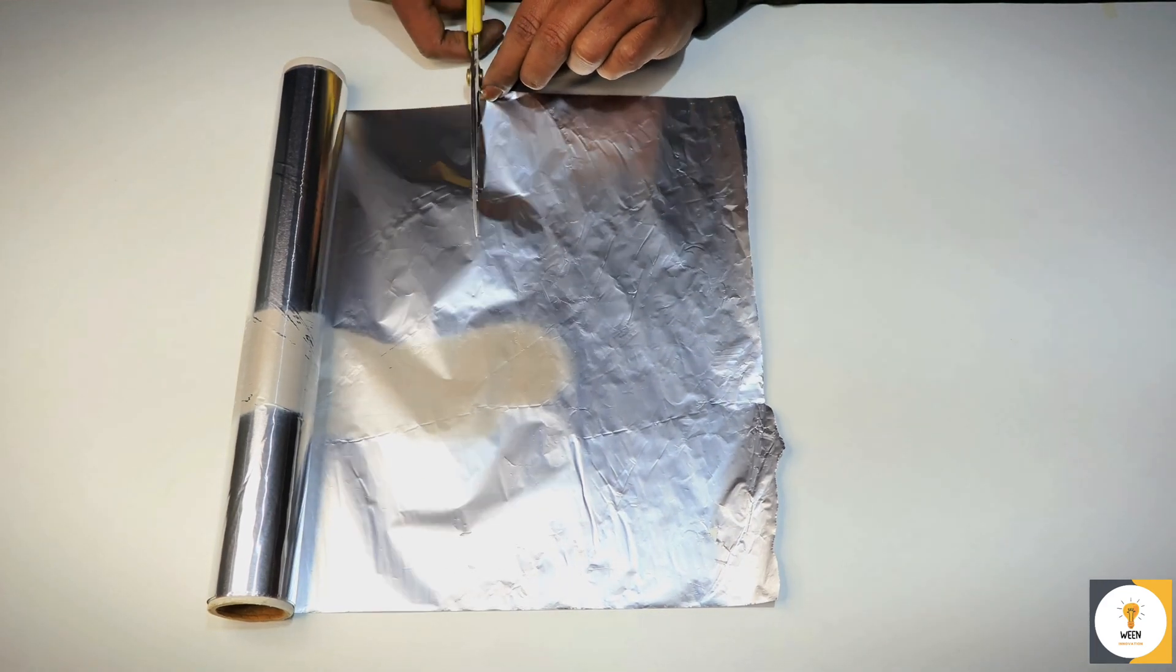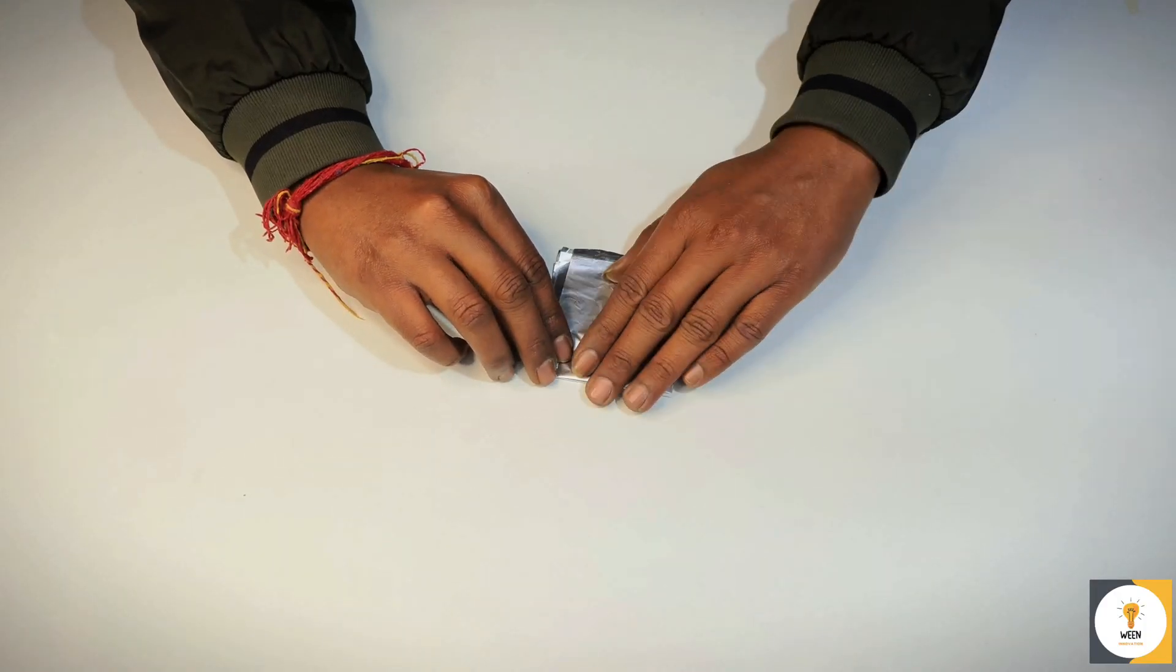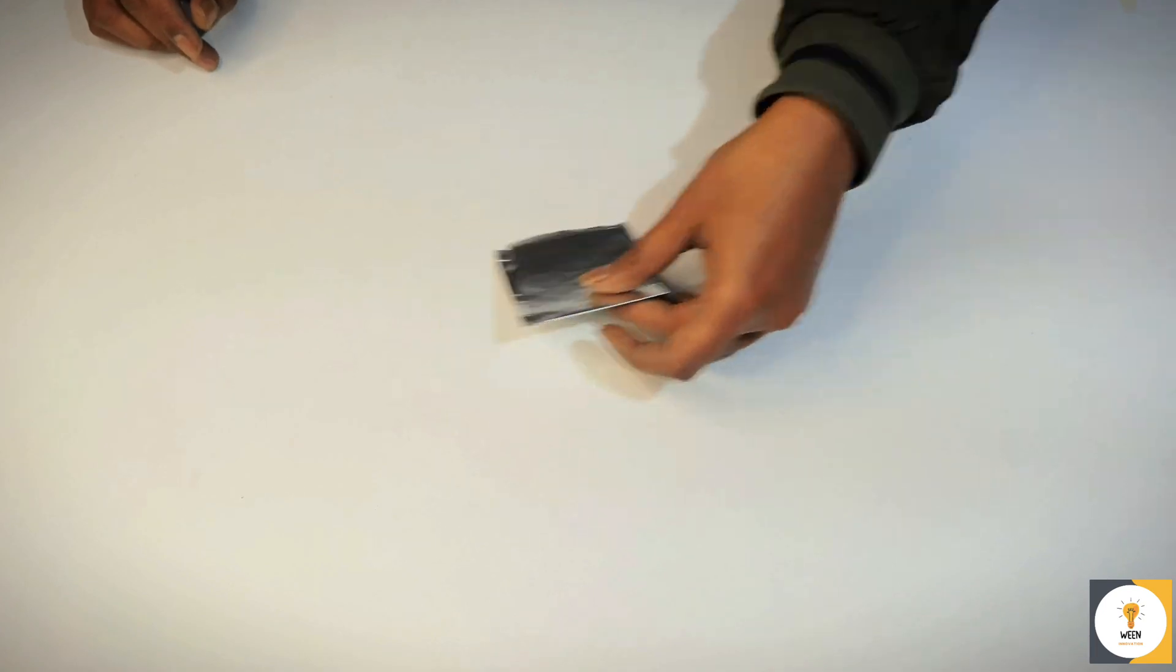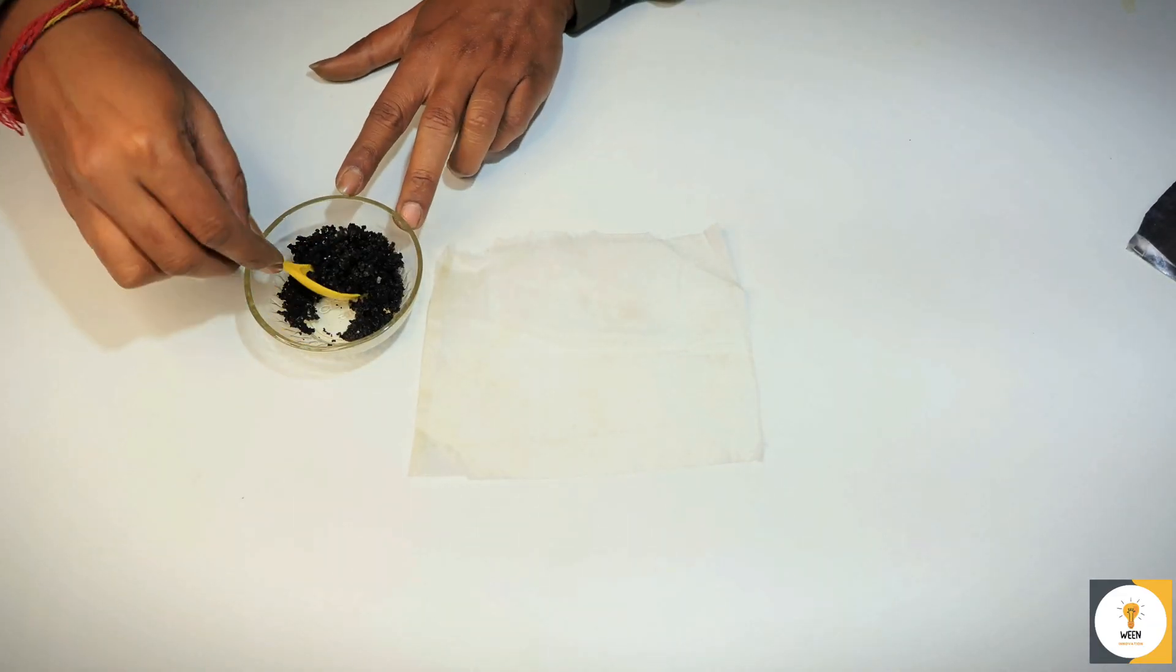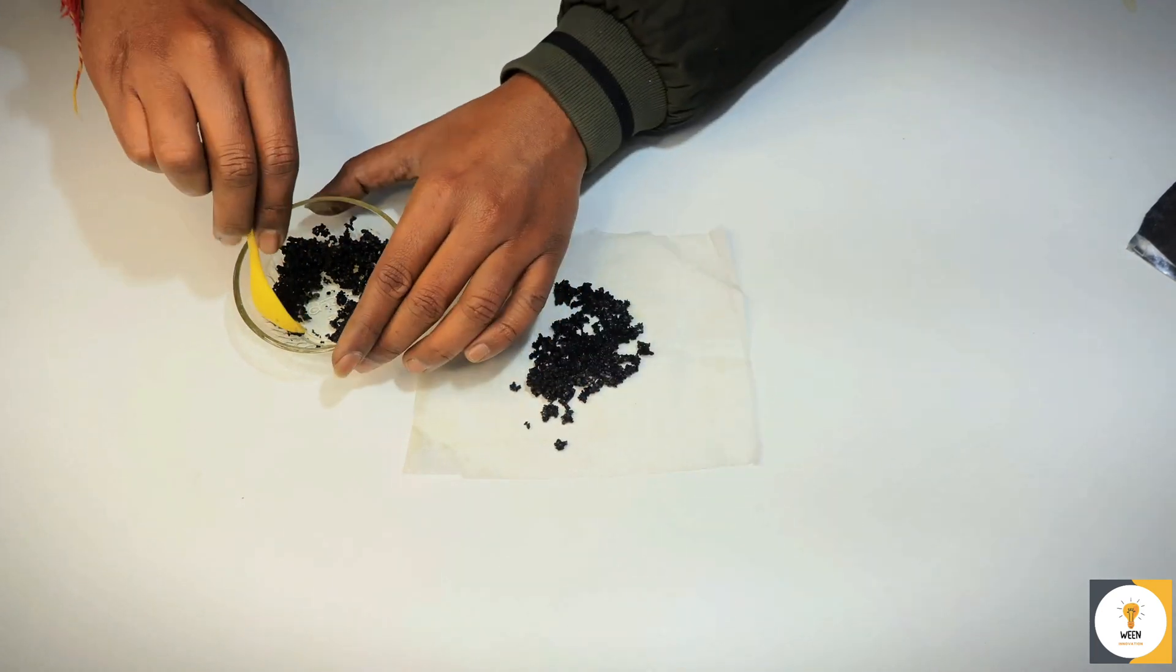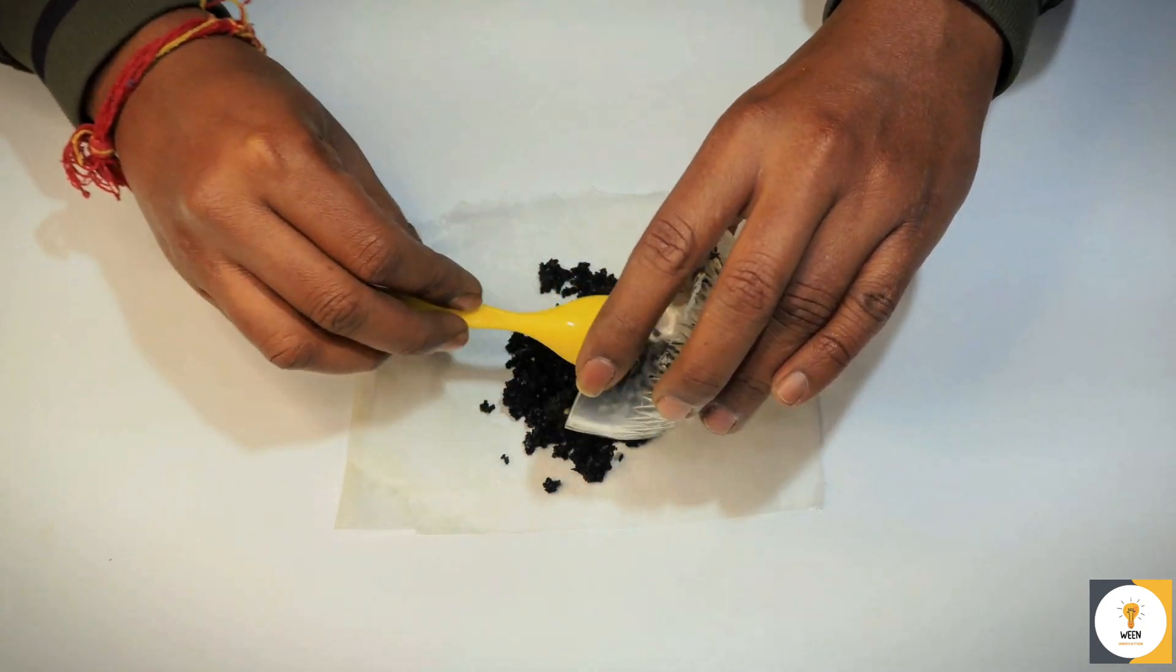Next, we need our air cathode. For this we will use activated carbon to help with the oxygen reaction. First of all, place the activated carbon on the cloth.